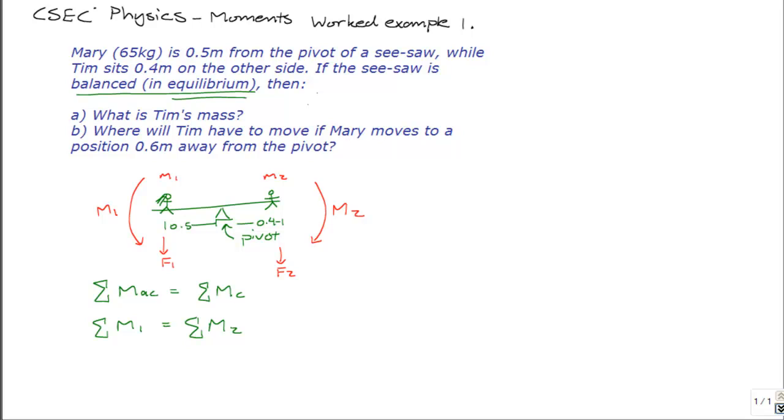So, let's go ahead and solve the first part of the question, finding Tim's mass. We know that this object, the seesaw, is in equilibrium. So, the turning moments on one side will be equal to the moments on the other side. The moment of a force, M, is equal to the force times the perpendicular distance from the pivot or turning point.